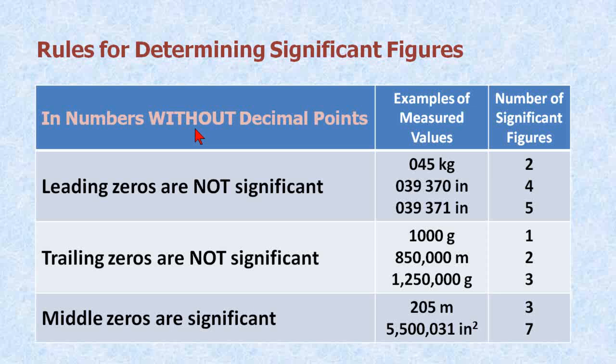In numbers without decimal points, the leading zeros are not significant. Here are some examples here. 0.45 only has two significant figures. And more importantly, trailing zeros are not significant. So a measurement of 1,000 grams has one significant figure. To make all these numbers significant, we would simply place a decimal point after that. And then middle zeros are significant always.